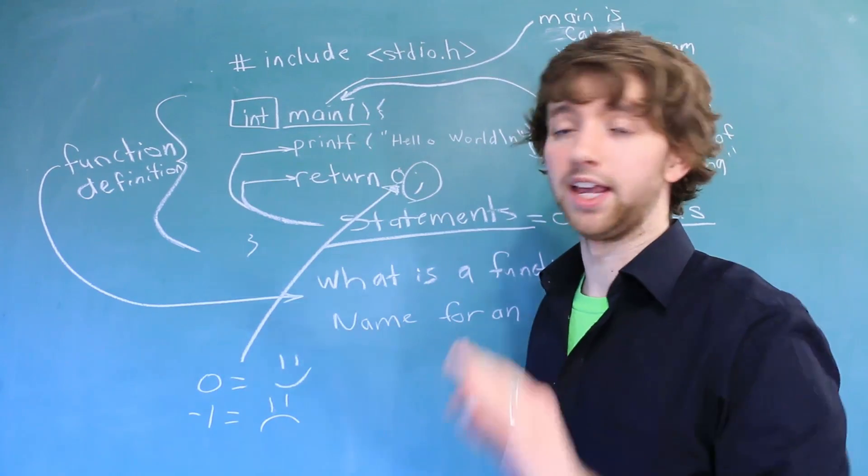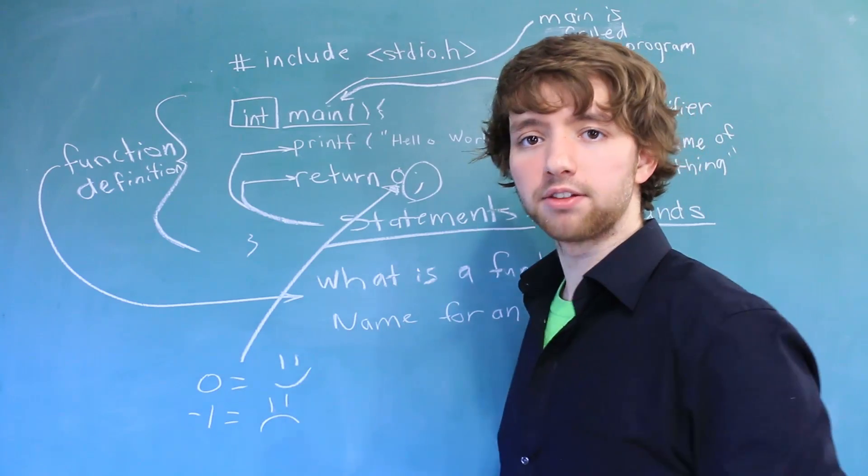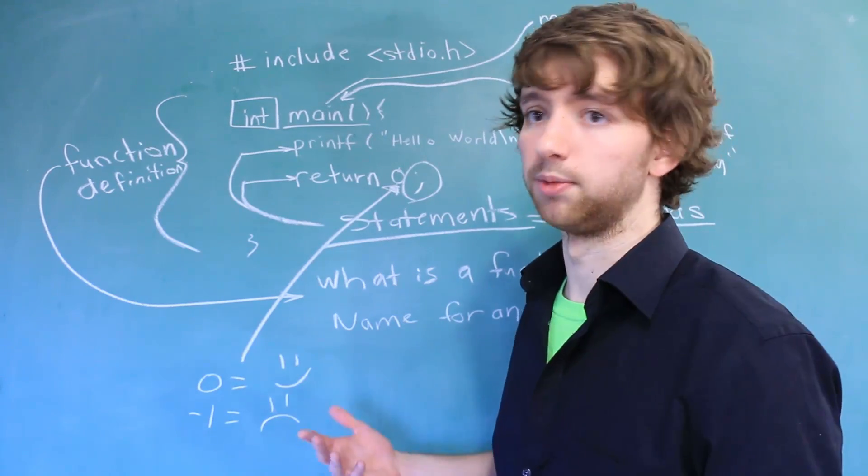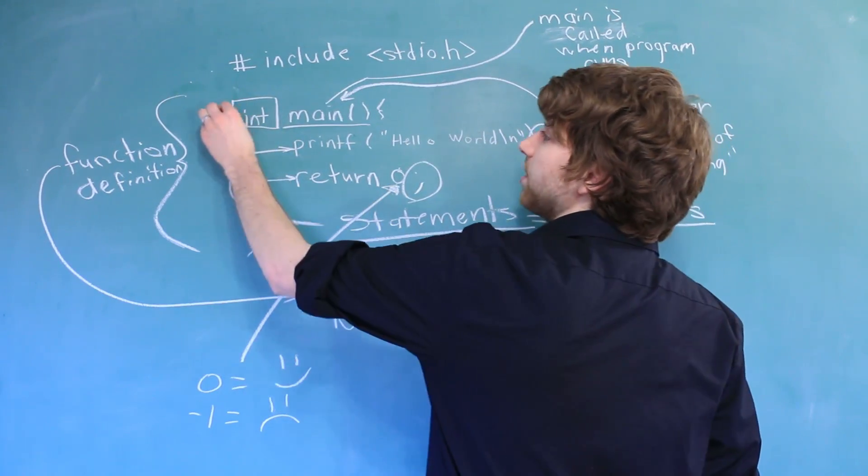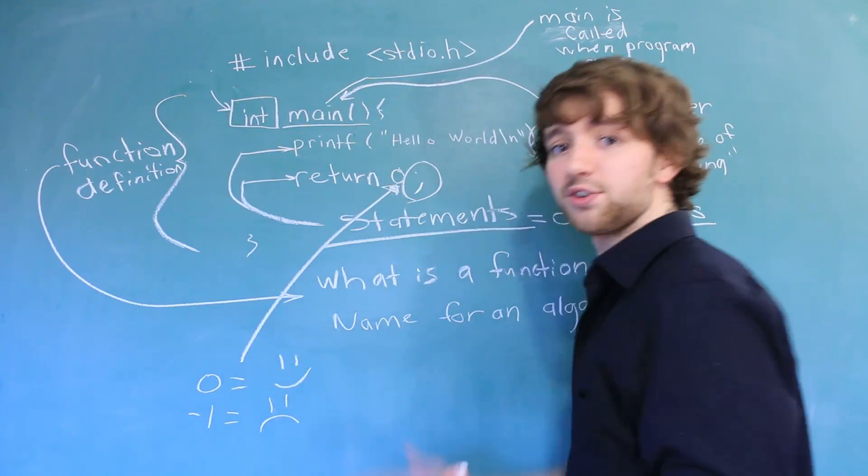Up here, we have what's known as the data type of zero. And we'll get into data types later, but just think back to math class. Integers are whole numbers. Zero, it's a whole number. So we're just saying, hey, we're going to return some integer. That's all that says.